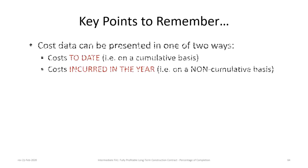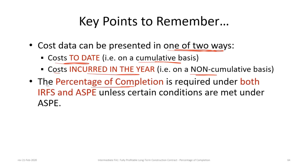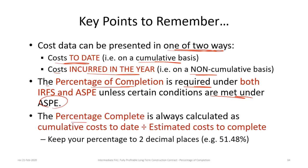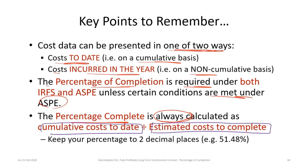Key points to remember: First, cost data can be presented either as costs to date (cumulative) or costs incurred in each year (non-cumulative) — identify which format you're given. Second, the percentage of completion approach is required under both IFRS and ASPE unless certain conditions are met under ASPE. Third, the percentage of completion is always calculated as cumulative costs to date divided by estimated total costs. Keep percentages to two decimal places — on large contracts, rounding can cause material differences.